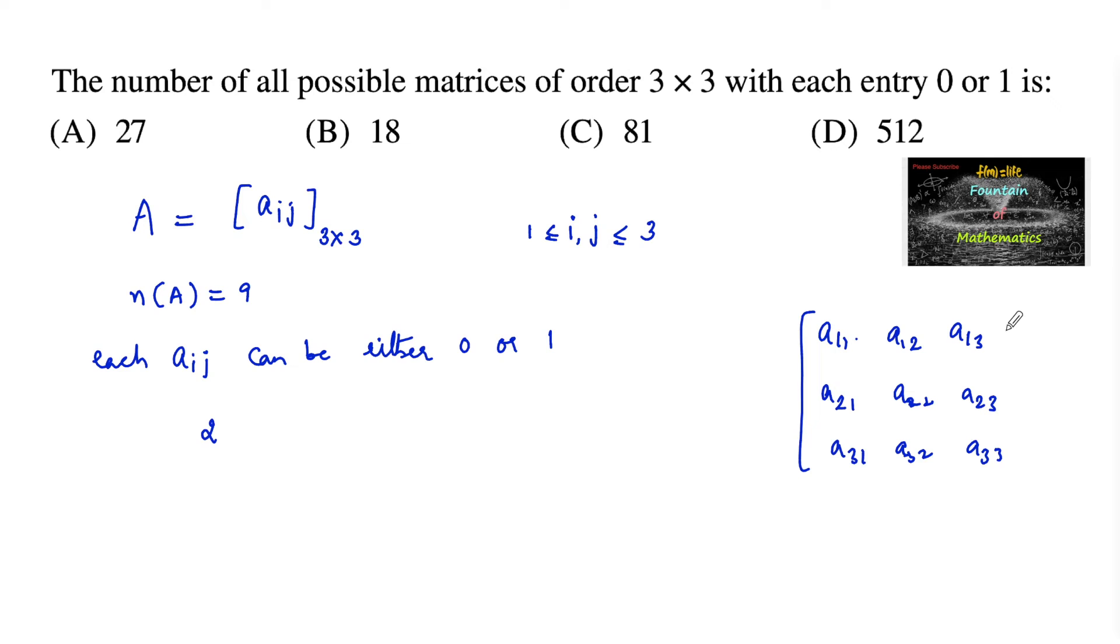By fundamental principle of counting, we can say that 2 times 2 times 2, 9 times because 9 elements are there. So we can write 2 to the power 9.